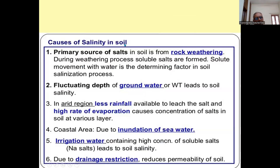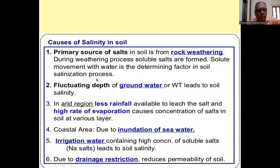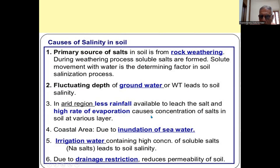Causes of salinity in soil: the primary source of salt in soil is from rock weathering. During the weathering process, soluble salts are formed. Solute movement with water is the determining factor in the soil salinization process. Fluctuating depth of groundwater is also a cause.